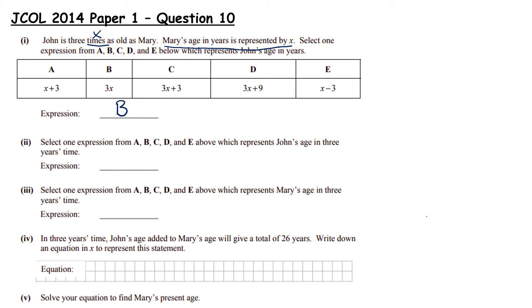Select one expression from A, B, C, D and E above which represents John's age in 3 years time. So if I asked you what age you are now and then asked you what age will you be in 3 years, you would add 3 to your current age. So currently John is 3x. So in 3 years he's going to have an extra 3 years. We're going to add on 3 so the correct expression there is C.